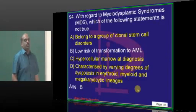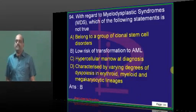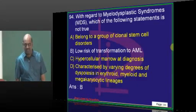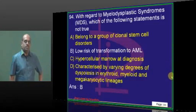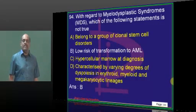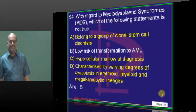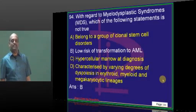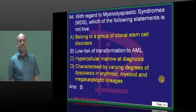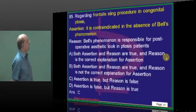Myelodysplastic syndrome — very high risk of transformation into AML. So myelodysplasia, myelofibrosis, AML, CML, CLL, HL, NHL and hairy cell leukemia (HCL) — these are the things you have to be quite sure about.